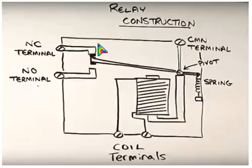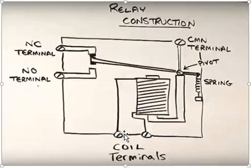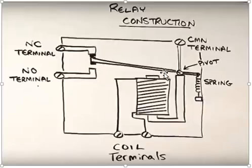Because of the spring, the armature is pulled upwards. The coil has two power supply terminals. If you give positive and negative voltage to these two terminals, the coil gets activated and becomes a magnet. The magnet attracts the armature and pulls it down, so the armature disconnects from the NC terminal and connects to the NO terminal.